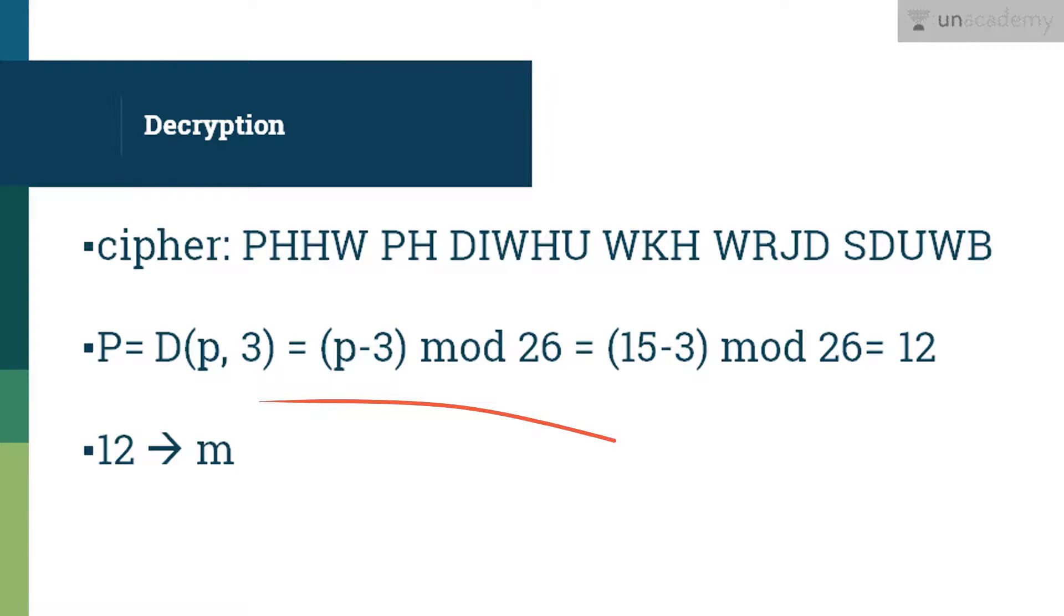So here as you can see, P, H, H, W and going on till S, D, U, W, B is your cipher text. So we take P which is 15 and then you subtract 3 from it. So it becomes 12. Now 12 mod 26 again is 12 itself where 12 stands for M. So M is your plain text. This is how you decrypt the Caesar cipher.